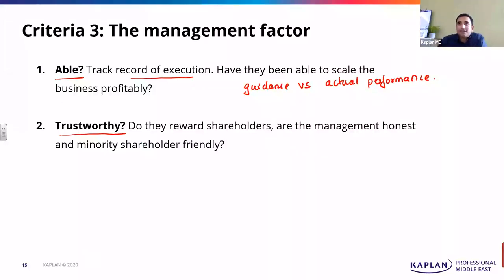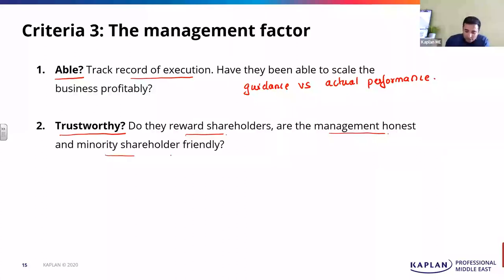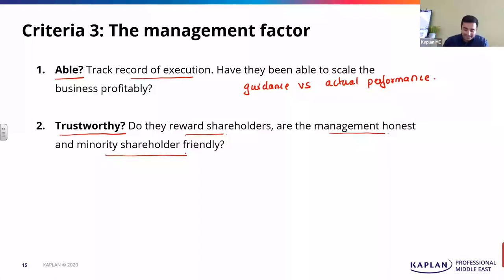Second is trustworthy. When we say trustworthy, again it's not easy — not simply 'this is a good promoter' or 'this is a bad management.' When you have to measure trustworthiness, you can only check through actions. Do they really reward shareholders? Is the management honest? Check management compensation versus growth in profits. Are the founders and the management team minority-shareholder friendly? One way to check: do they really buy back stocks or announce dividends? Salary compensation structure — you can check, and all these things are openly available in financial statements.